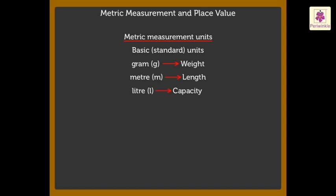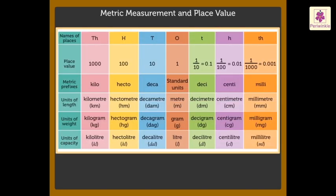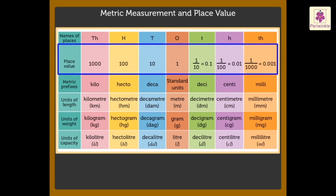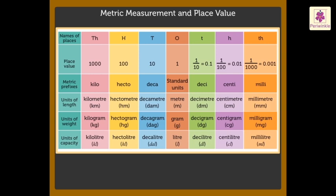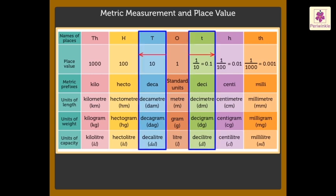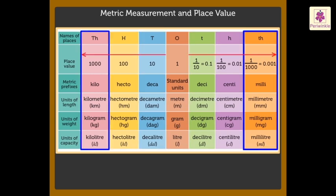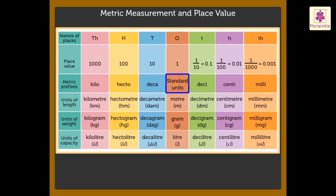In our daily life, we often need to use many other units, bigger or smaller than these standard units. Let's get to know them through this table. It shows the place values of each unit and helps in determining the relation between the units. The standard units of measurement — meter, gram, and liter — are placed in the ones column.